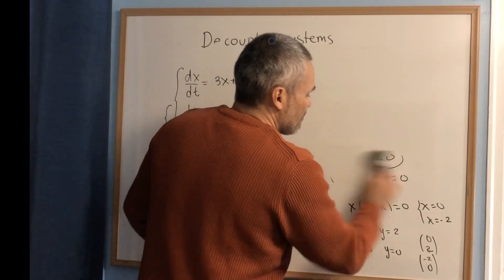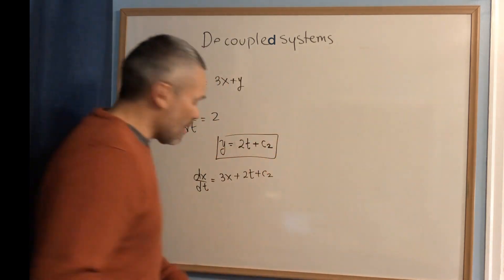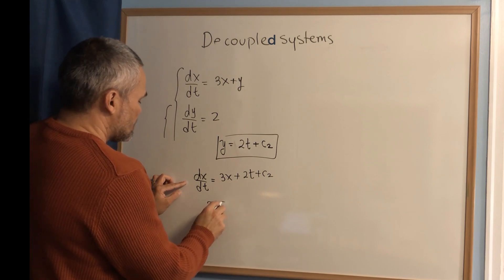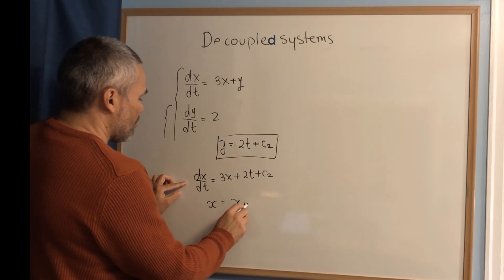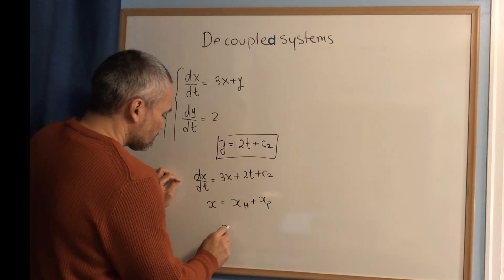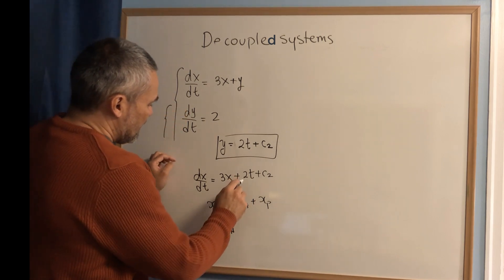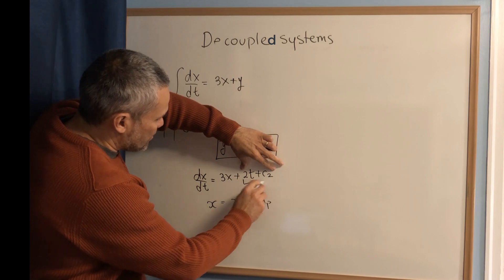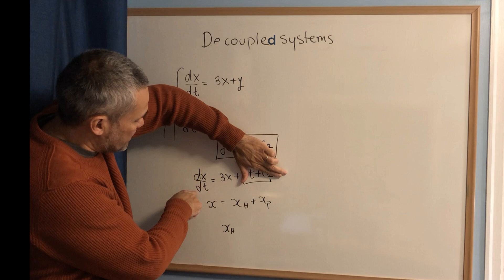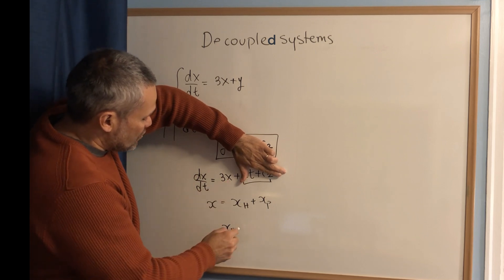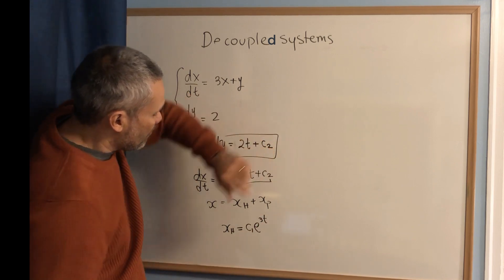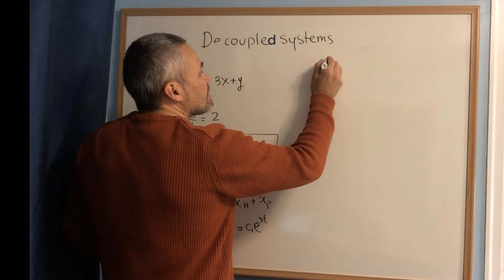This is a linear equation and we use the guessing technique. The general solution is the homogeneous solution plus the particular solution. The homogeneous equation is what we get when we replace the non-homogeneous part with zero: dx/dt equals 3x. The solution of this homogeneous equation is c1 e to the 3t.